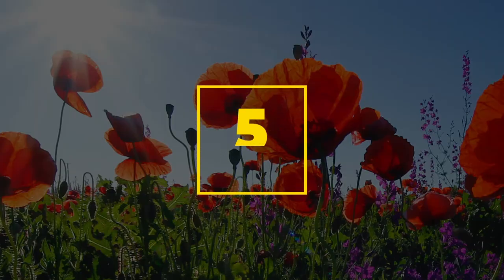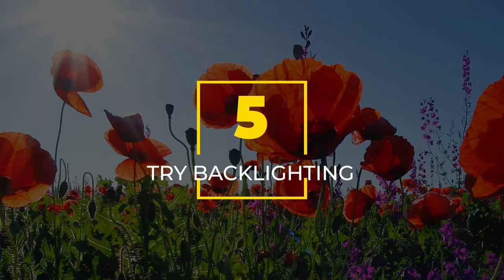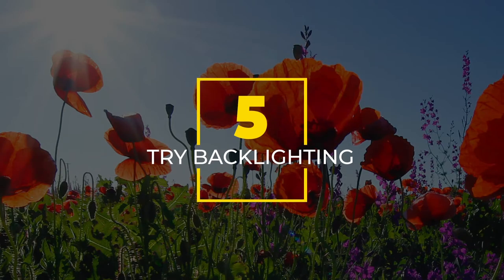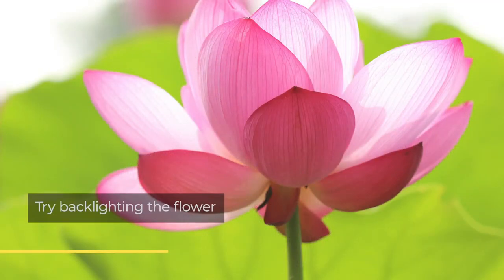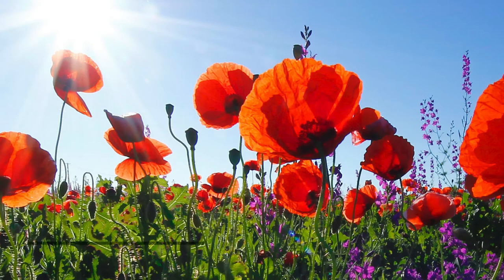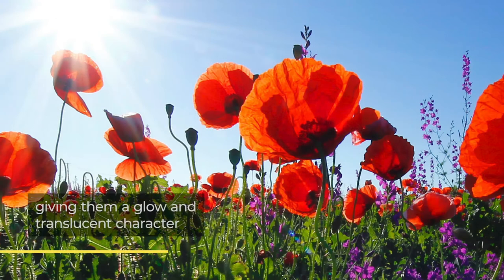Number five: try backlighting the flowers. One of the great ways of taking photographs of flowers is to backlight them. This means having the sun coming through the back of the flower, giving them a glow and making the petals seem translucent.